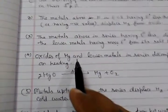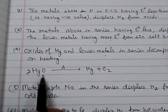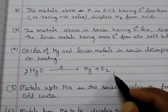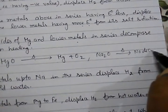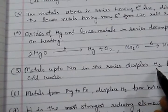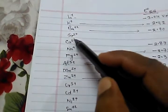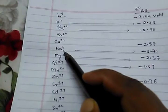Oxides of mercury and lower metals in the series decompose on heating. For instance, when mercury oxide is heated, mercury and oxygen are separated out. However, if we heat sodium oxide, there is no decomposition. Metals up to sodium in the series — lithium, potassium, barium, strontium, calcium, and sodium — can displace hydrogen from cold water. Metals from magnesium to iron can displace hydrogen from hot water or steam.